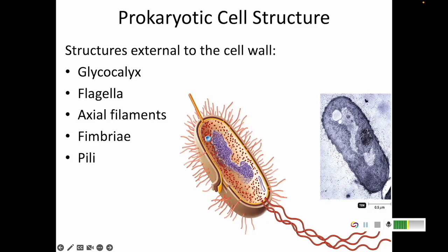Welcome back class. We are talking about the anatomy of cells, and this is chapter 4, part 2. We have discussed some differences of eukaryotic and prokaryotic cells and some similarities they have. Now we're going to jump into prokaryotic cells specifically.